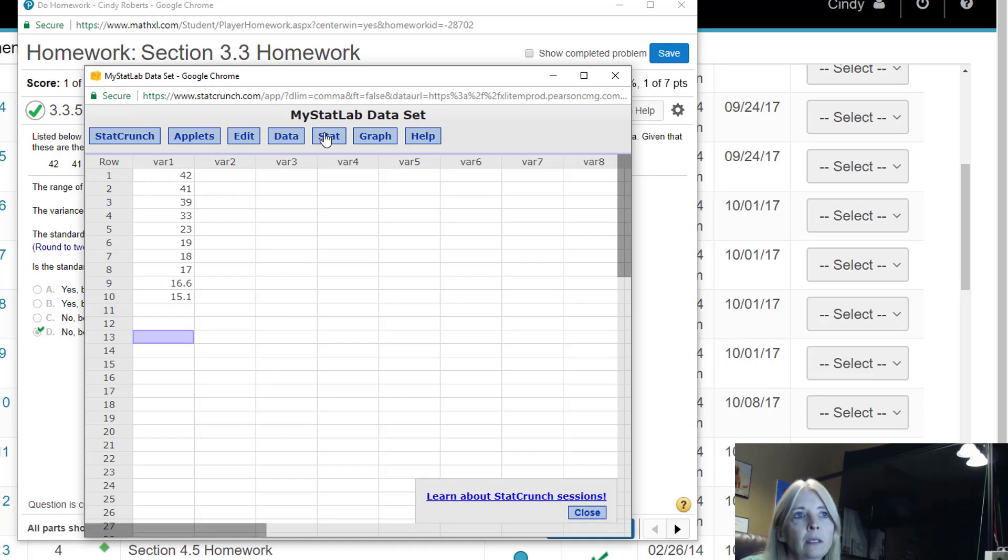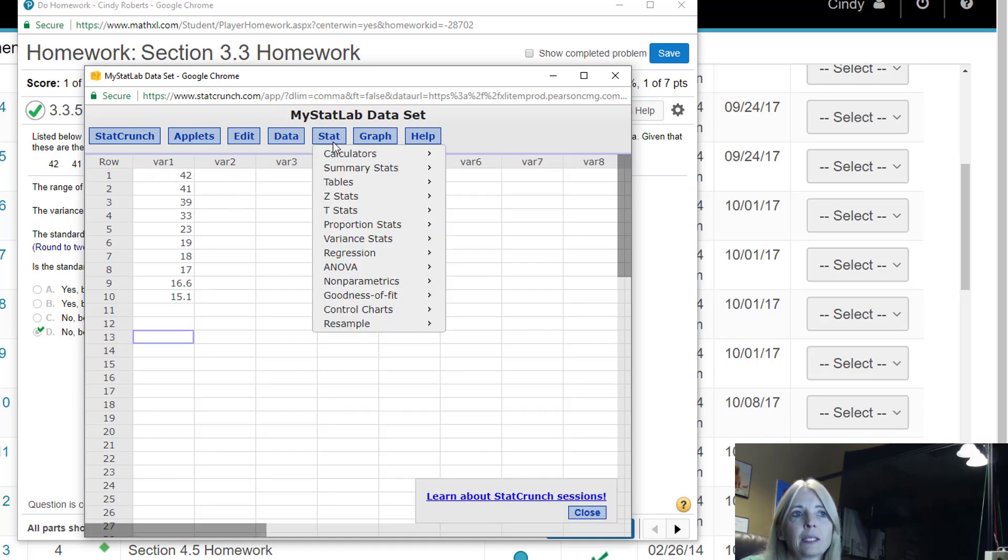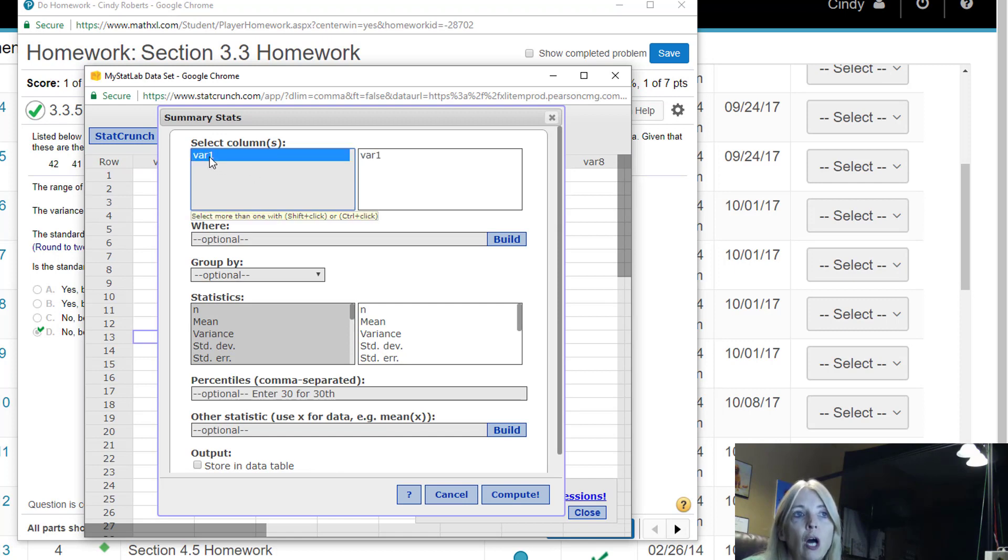There's my data. I go up to Stat, Summary Stats. I tell it I want Columns because my data is in a column. I click which column I want, and then down here again I can click off of that to get just what I want. I can get the variance, and I scroll through these—the mean, the variance, standard error, oh look, there's the range.